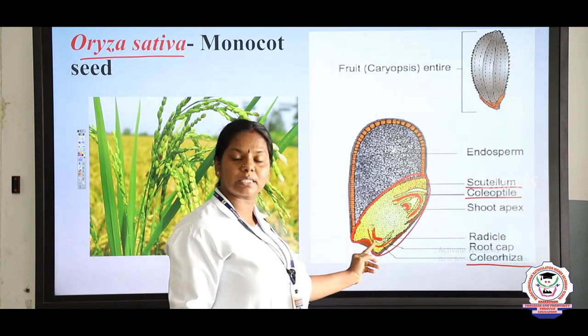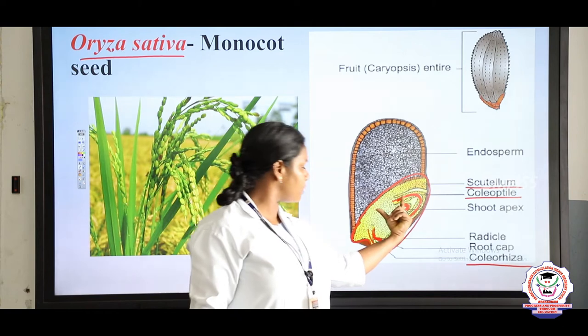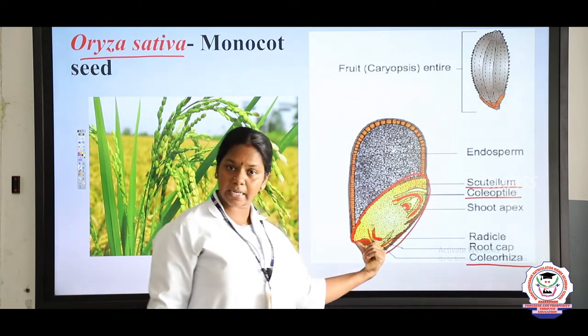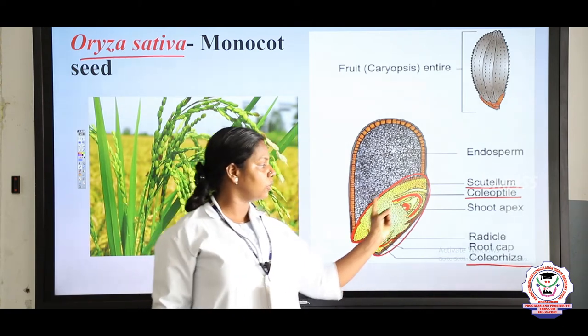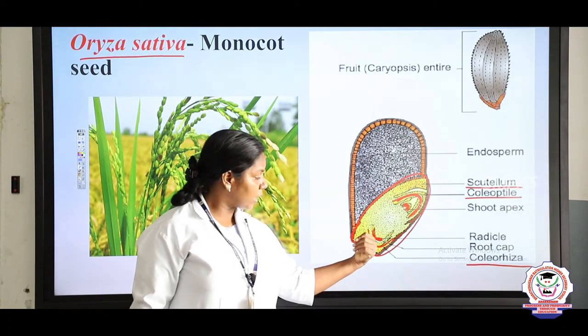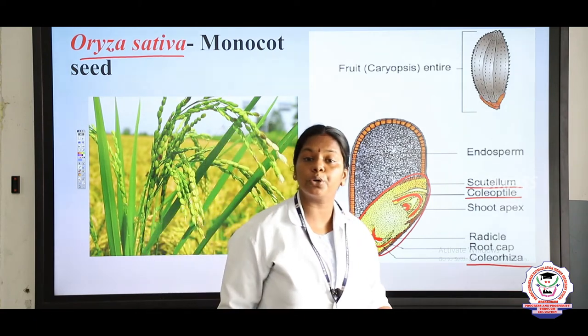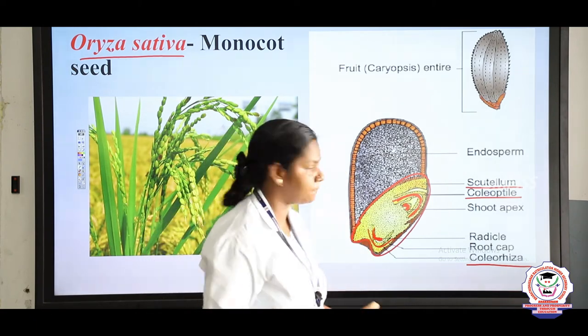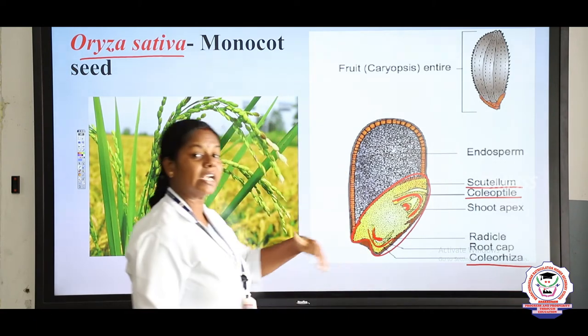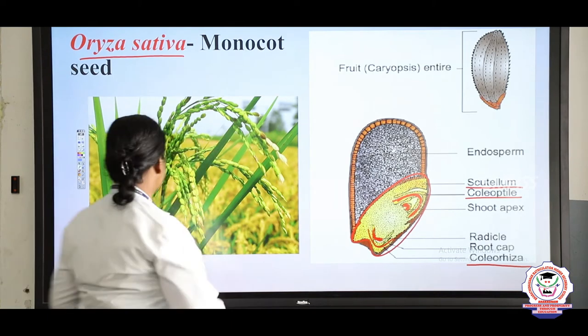The endosperm is covered by the shield-shaped structure called the scutellum. It possesses a plumule and radicle; the plumule is covered by the coleoptile and the radicle is also covered by a protective sheath called the coleoptile. Now let us recall the monocot seed.